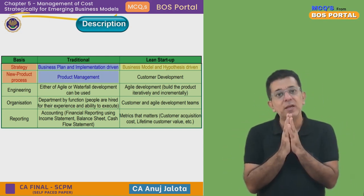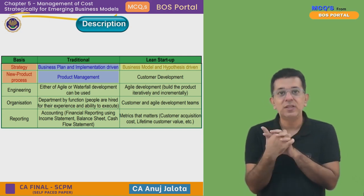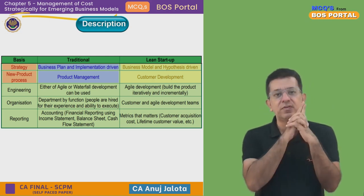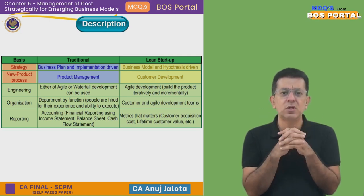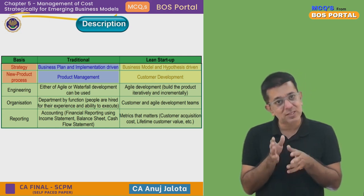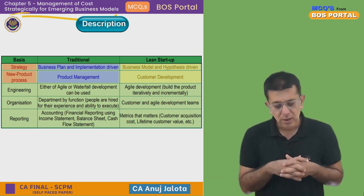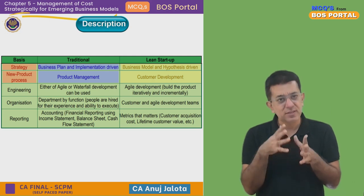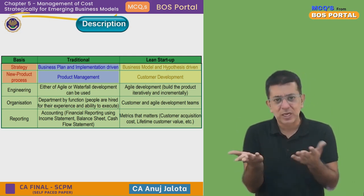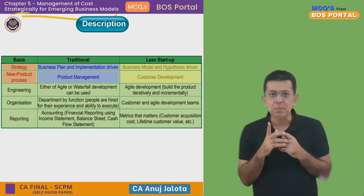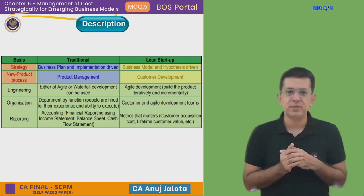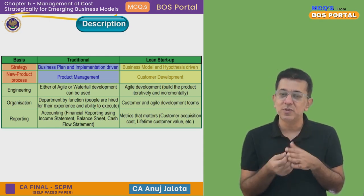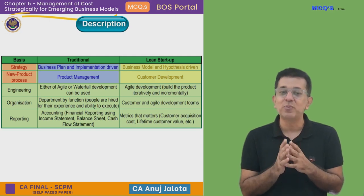An example is Bajaj Chetak EV — when it launched initially, it was not a successful scooter, and Ola was way ahead despite Bajaj launching Chetak earlier. But Bajaj kept working on its product, with strong servicing, and eventually started doing well in EV two-wheelers. Traditional companies believe a great product will automatically attract customers, while lean startups think they must actively convince the customer to buy.